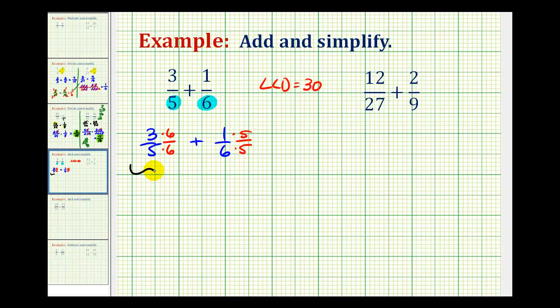So when we multiply these two fractions, we're going to have 18 thirtieths. We multiply here, we're going to have 5 thirtieths. Now that our denominator is the same, we can add the fractions. The denominator is going to stay the same, and then we add the numerator. So 18 plus 5 is equal to 23.